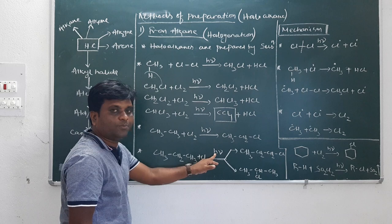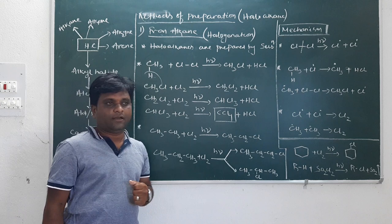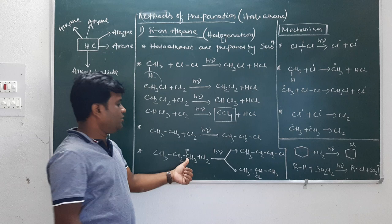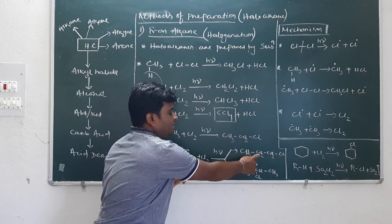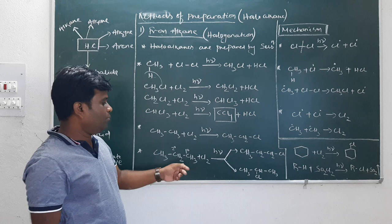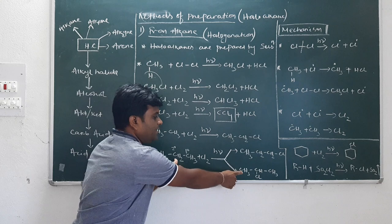Propane reacts with chlorine in the presence of UV light or sunlight. Here all hydrogens can be replaced. There are two types of carbons: primary carbon and secondary carbon. When hydrogen is replaced from primary carbon, the product is CH3CH2CH2Cl, called 1-chloropropane. When hydrogen is replaced from secondary carbon, the product is CH3CHClCH3, called 2-chloropropane.